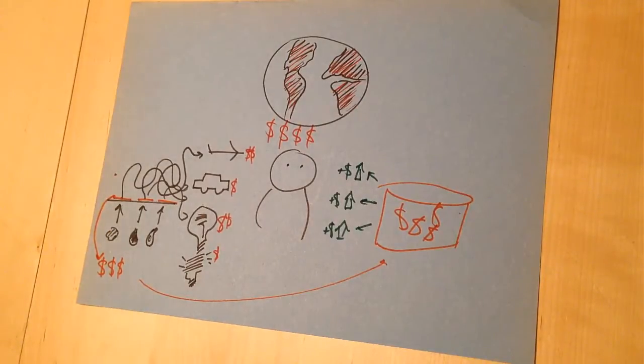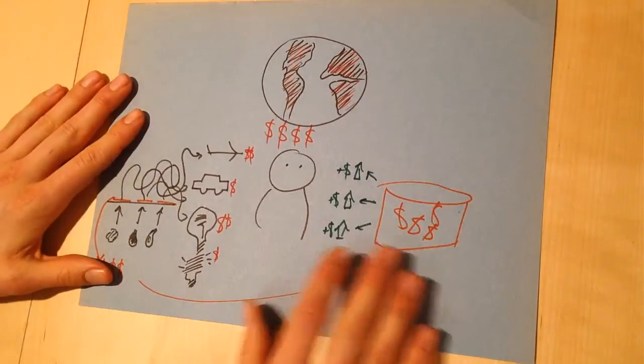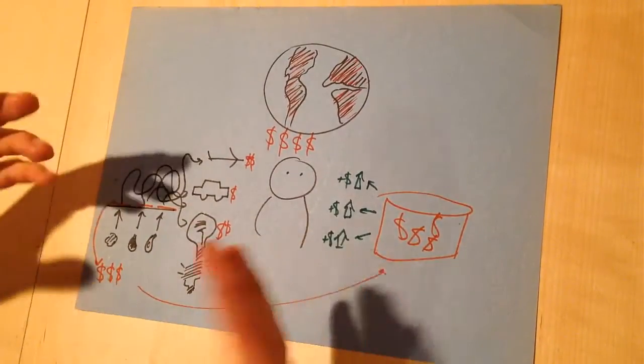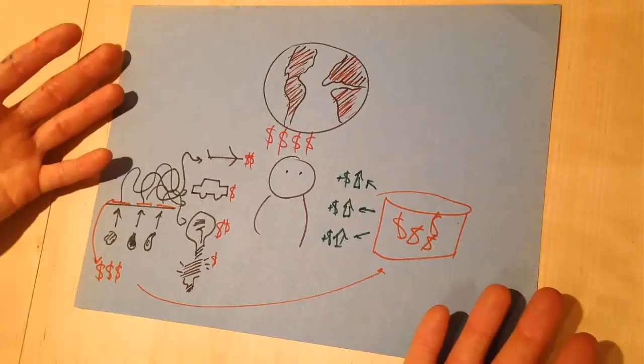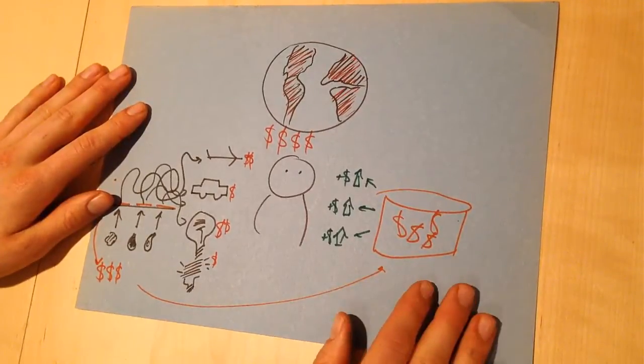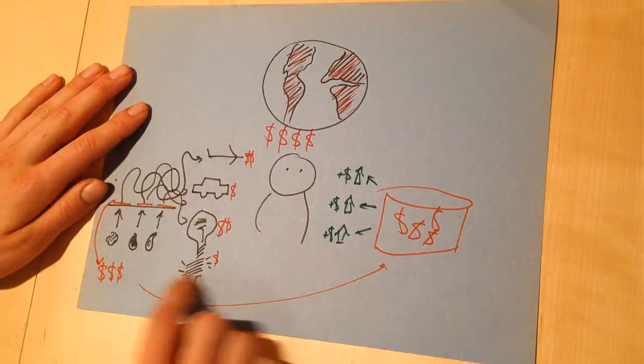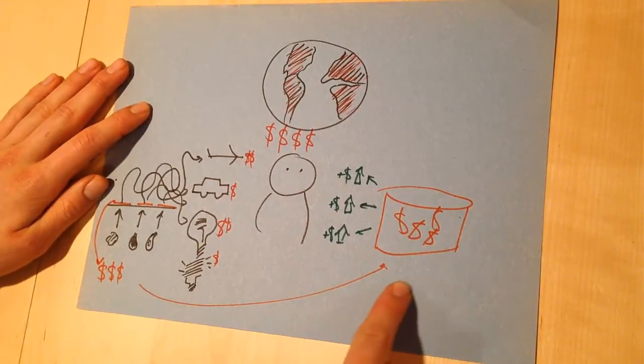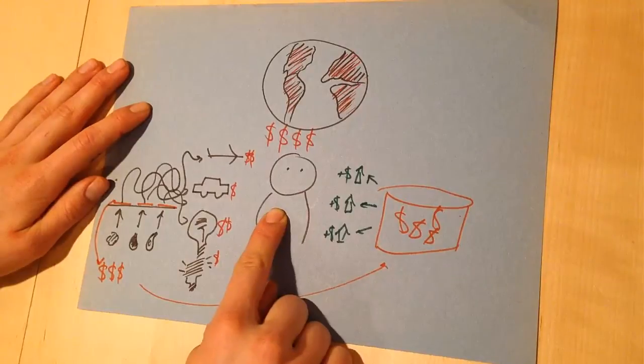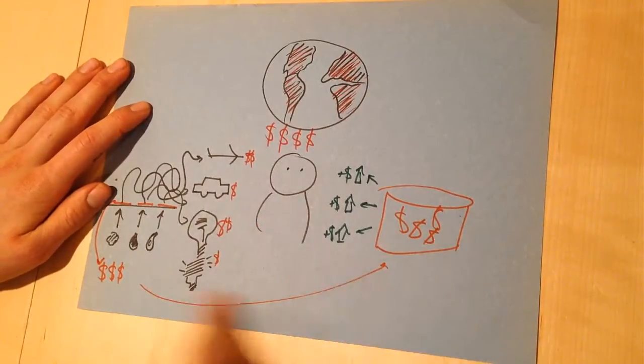The only way this is going to happen is if there's political will for it, and that means that everybody needs to agree on it. It needs to be a nonpartisan proposal, Republicans and Democrats. Republicans are really interested in something that does not expand the size of government, and that's what this does. It's a carbon tax, but it recycles all the money immediately back to the people, not expanding the size of government.